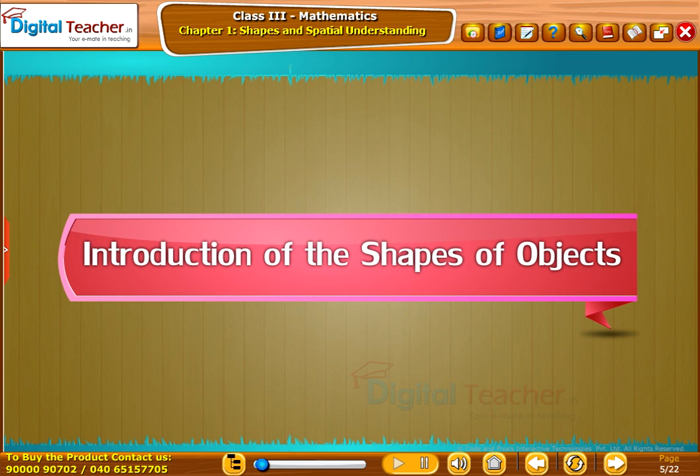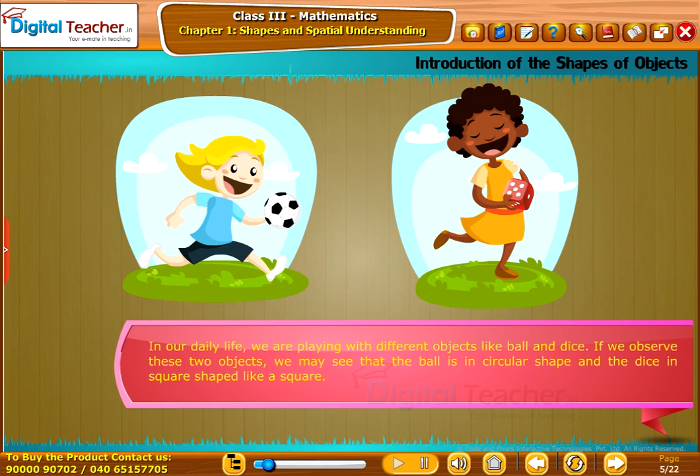Introduction of the shapes of objects: In our daily life, we are playing with different objects like ball and dice. If we observe these two objects, we may see that the ball is in circular shape and the dice in square shape like a square.